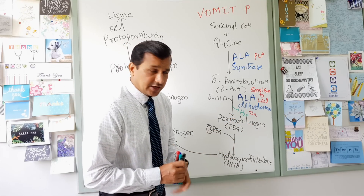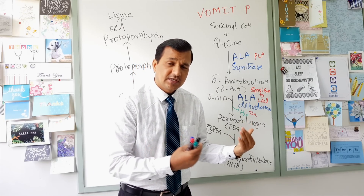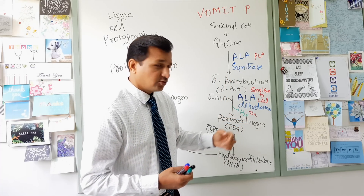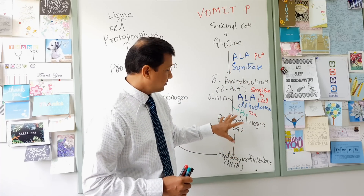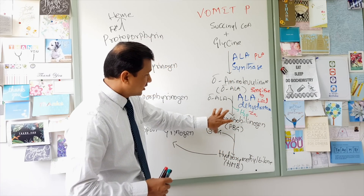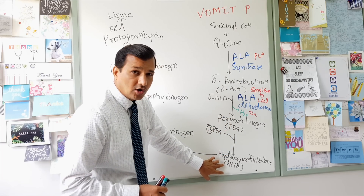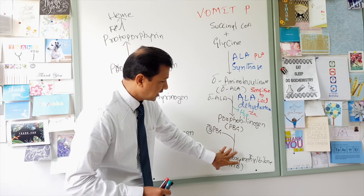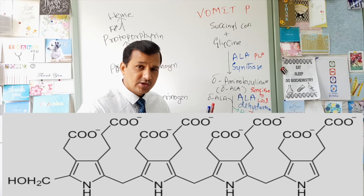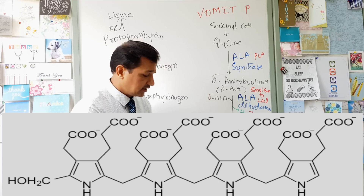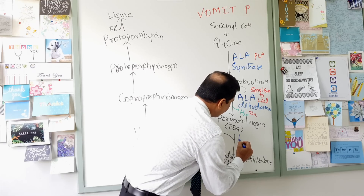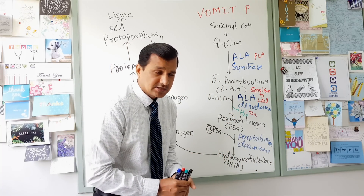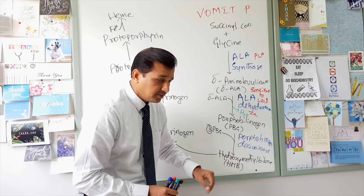Porphobilinogen is the first pyrrole ring synthesized. Since heme has four pyrrole rings, you need four porphobilinogen molecules to make a molecule called hydroxymethylbilane. Four porphobilinogen molecules condense with one another to make hydroxymethylbilane, a linear molecule. This job is done by an enzyme called porphobilinogen deaminase (PBG deaminase), also referred to as hydroxymethylbilane synthase.